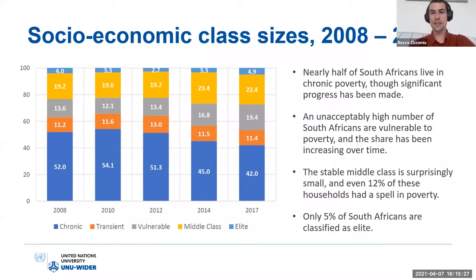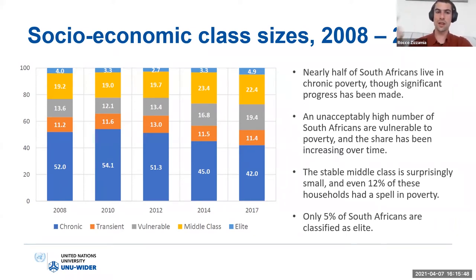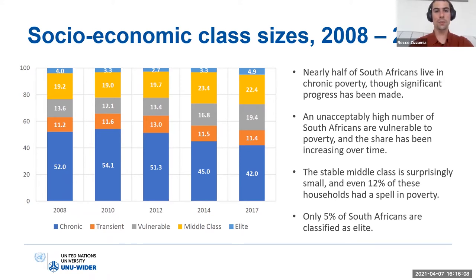Applying this schema to the NIDS data, we can estimate the size of these different groups for each year. About half of the South African population is chronically poor — meaning not only are they poor, they're unlikely to escape poverty. About 20% is stably middle class — not only not poor but also unlikely to become poor. And in the middle, we've got a big chunk of about one third of the population occupying this position of precarity, straddling the poverty line, with some above and some below, swapping places over time.